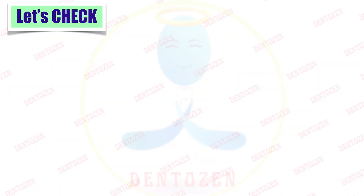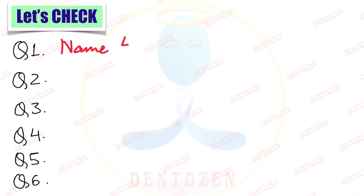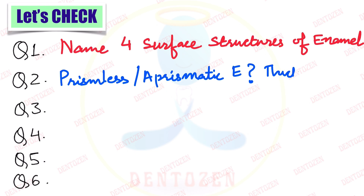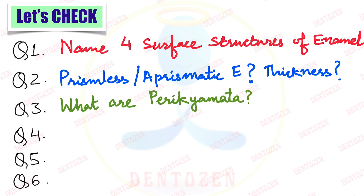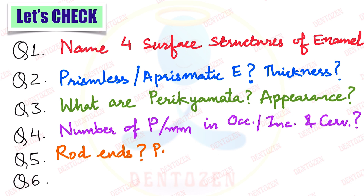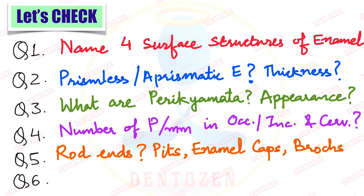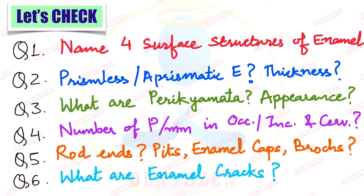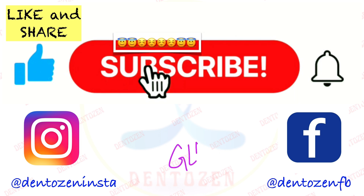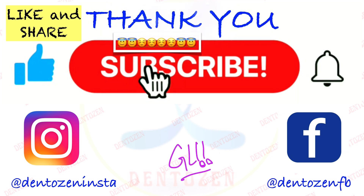Let's check what you have learned. Name the four surface structures of enamel. What is aprismatic or prismless enamel and what is its thickness? What are perichymata and how do they appear? What is the number of perichymata in the occlusal region and in the cervical region? What are rod ends, pits, enamel caps, and enamel brocks? And what are enamel cracks? That is all for this video. If you enjoyed it, tap the like button and share with your friends. Keep learning, keep watching, and keep smiling. Good luck for your exams. See you in the next video. Take care. Bye-bye.